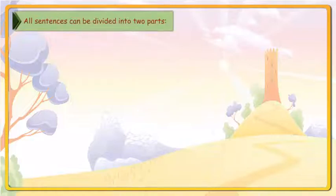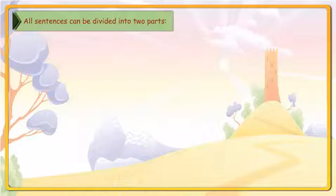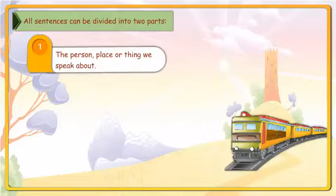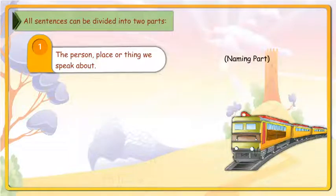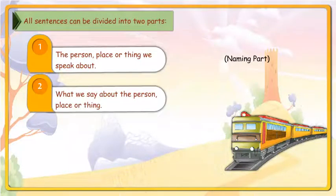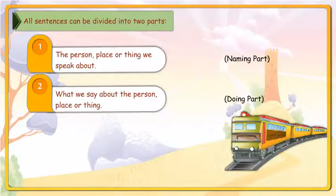Chapter 4: Subject and Predicate. All sentences can be divided into two parts. The person, place or thing we speak about — the naming part. What we say about the person, place or thing — the doing part.